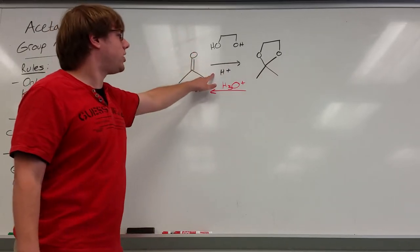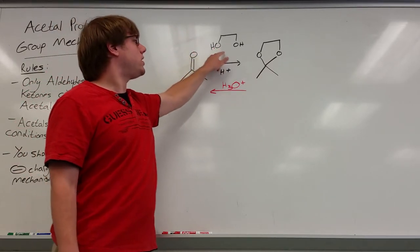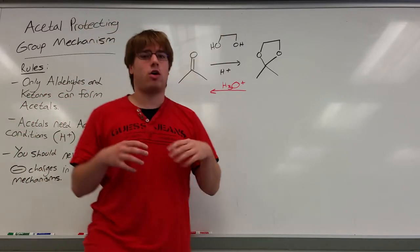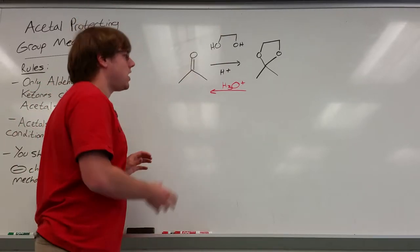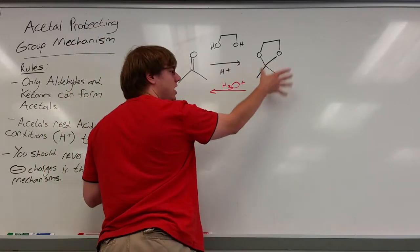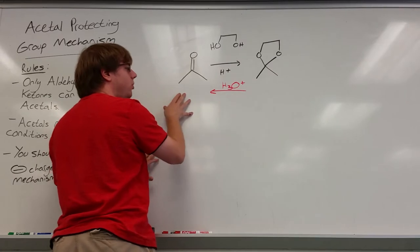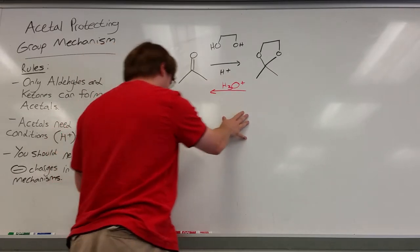you do that by using H+, and two OHs that are linked by two carbons. It's called a diol, a carbon chain with two alcohols. And if you want to go the opposite direction, you want to take your protecting group and remove it going forward, turn it back into the double bond O, you use H3O positive.